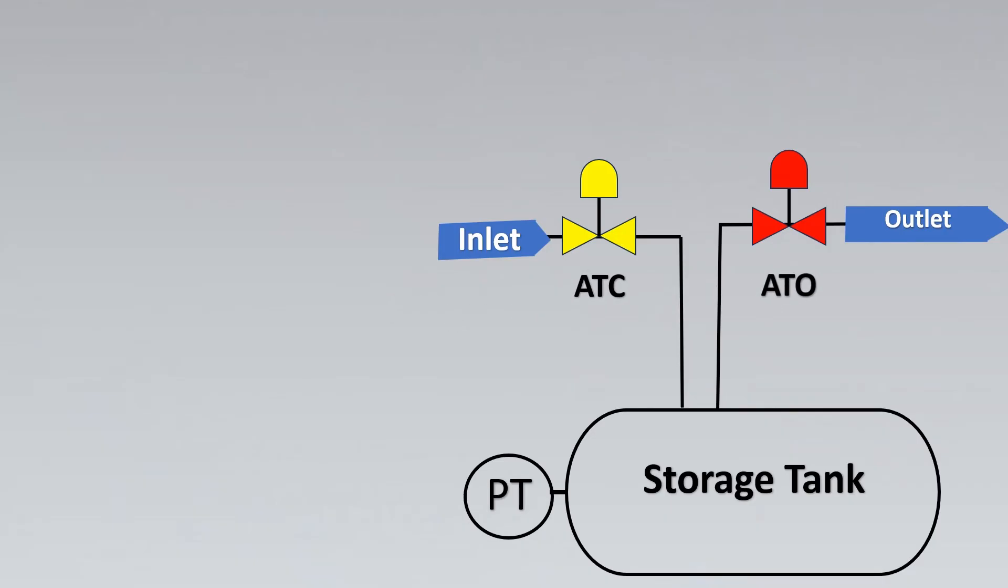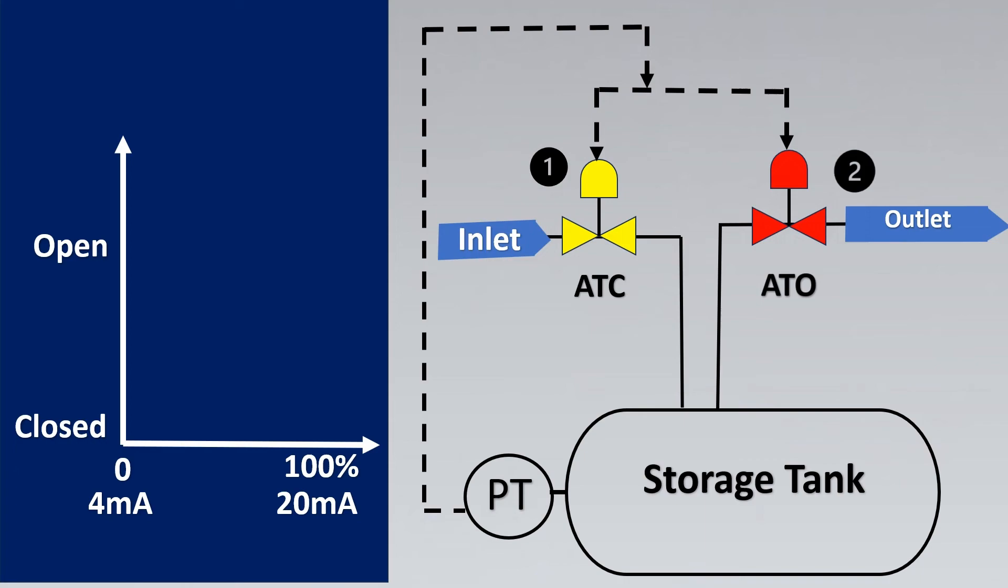But remember one is air to close and one is air to open. So they are opposite in reaction to each other. Now pressure transmitter signal will be split between the two valves. Let us look now what happens with these two valves. So as we said here is the graph to it. Here is the pressure transmitter output and here is the 50% line.